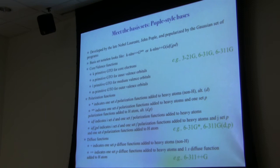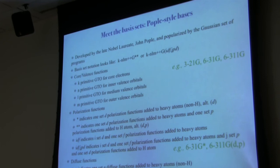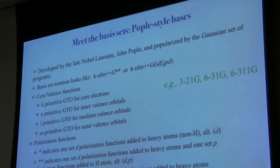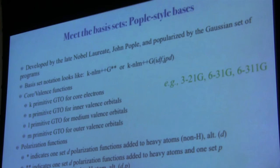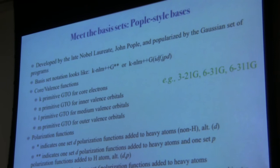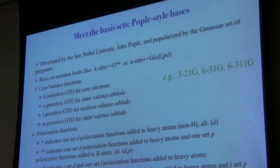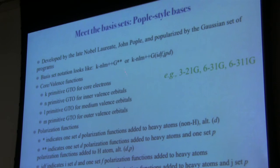First, Pople-style basis sets, developed by John Pople and popularized by the Gaussian program. The key identifier is a capital G towards the end. There are three regions of this name: K-NLM for core and valence functions, stars or items in parentheses after the G for polarization functions, and pluses for diffuse functions.